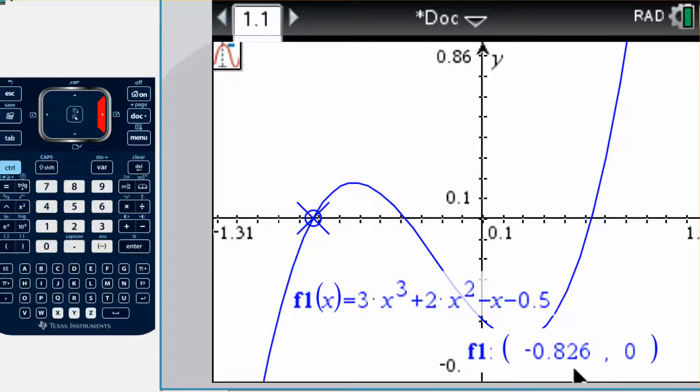If you look down in the corner here, it's showing me that when y is equal to zero, x is equal to negative 0.826. So that would be my first zero or my first x-intercept.